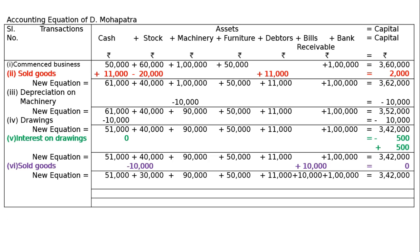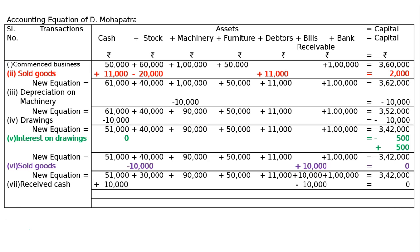Transaction 7: Received 10,000 from Gupta against the bills receivable on its maturity. Gupta paid us the money, so add to cash rupees 10,000 and deduct from bills receivable 10,000 — net effect zero. The final equation: cash 61,000; stock 30,000; machinery 90,000; furniture 50,000; debtors 11,000; bills receivable zero; bank balance 1 lakh; total capital 3 lakh 42,000 rupees.